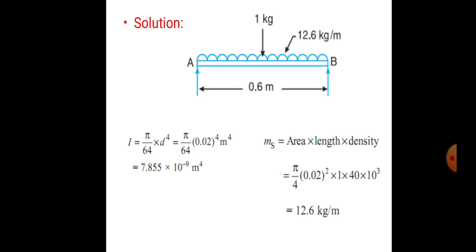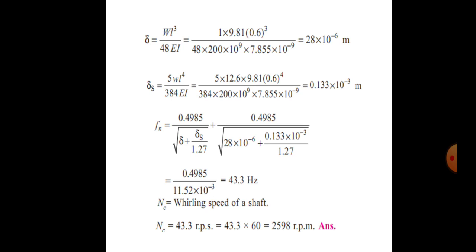I equals pi over 64 into d to the power 4; putting d equals 0.02 m, I equals 7.855 × 10⁻⁹ m⁴. Ms equals area into length into density: pi over 4 times (0.02)² times 1 times 40 × 10³, giving ms equals 12.6 kg/m. Putting all values into delta equals W·L³ over 48·E·I gives delta equals 0.28 × 10⁻⁶ m. For the distributed load, putting W as 12.6 gives delta_s equals 0.133 × 10⁻³ m.